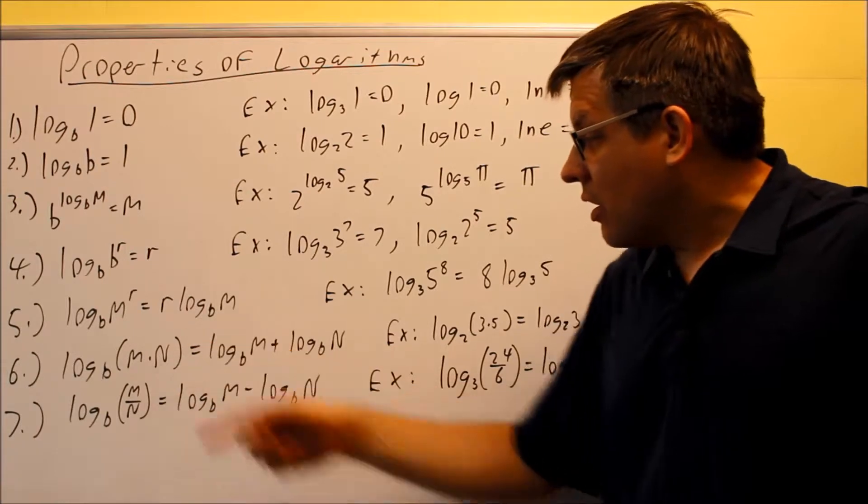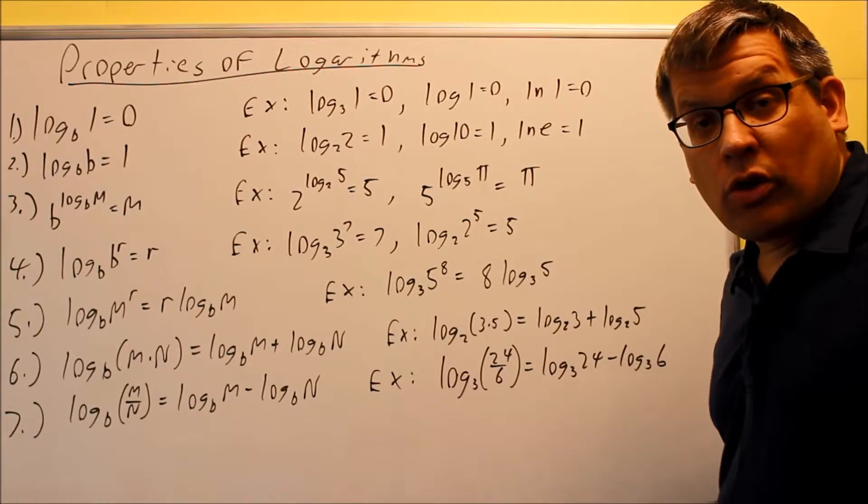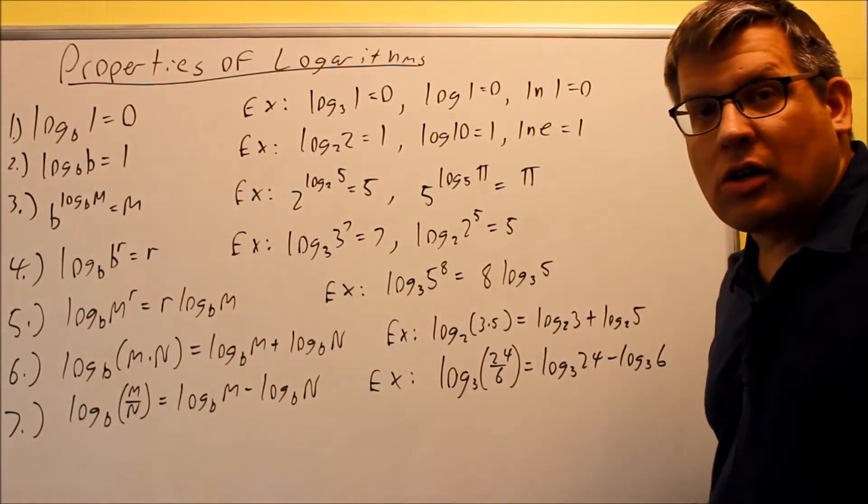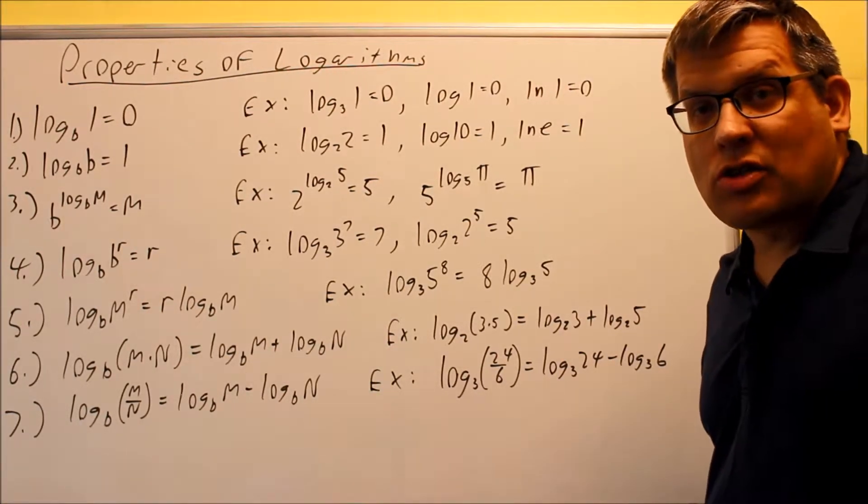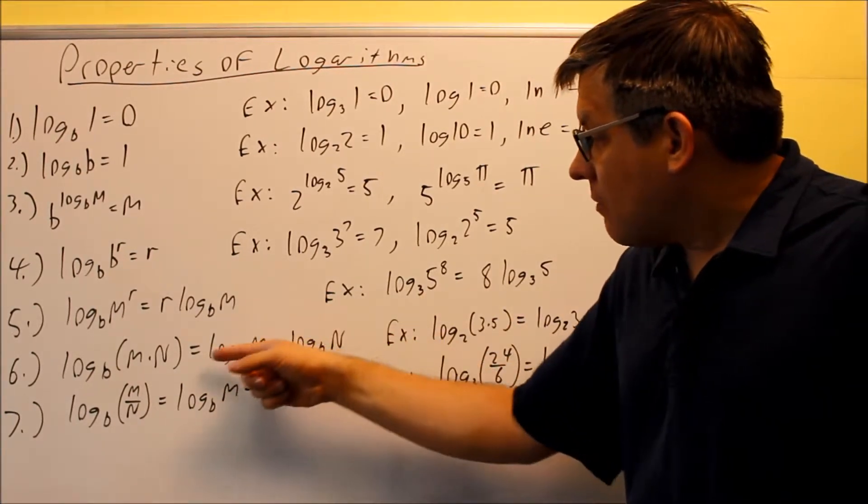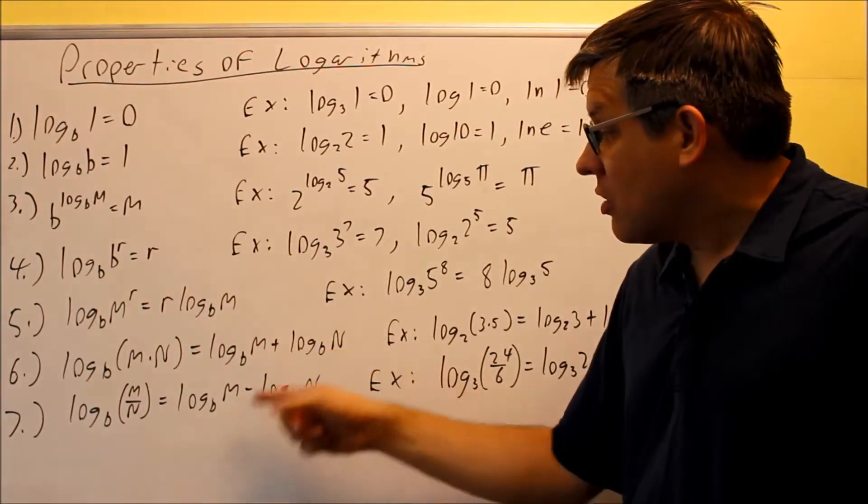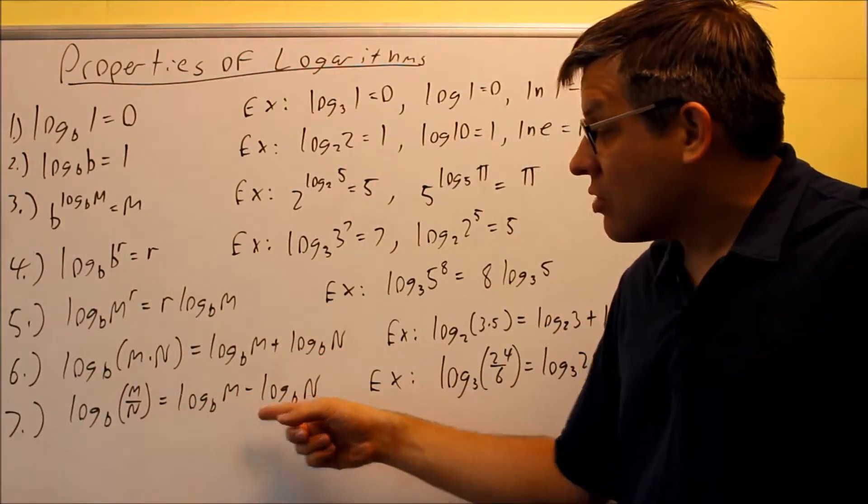These properties 5, 6, and 7 are the ones you'll be doing the most work with because you'll be working with variables. We'll take a look at examples later on. These two basically break up as multiplication goes to addition and division turns into subtraction. These two rules actually come from our exponent rules.